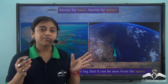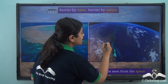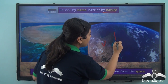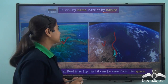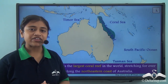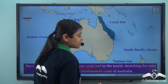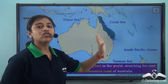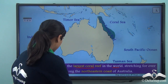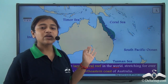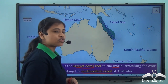The Great Barrier Reef is so large that it can be seen from space. It is the largest coral reef in the world and stretches along the northeastern coast of Australia for a distance of 2,300 kilometres.